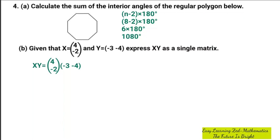So question B was, given that X is equal to 4, negative 2, and Y is equal to negative 3, negative 4, express XY as a single matrix.